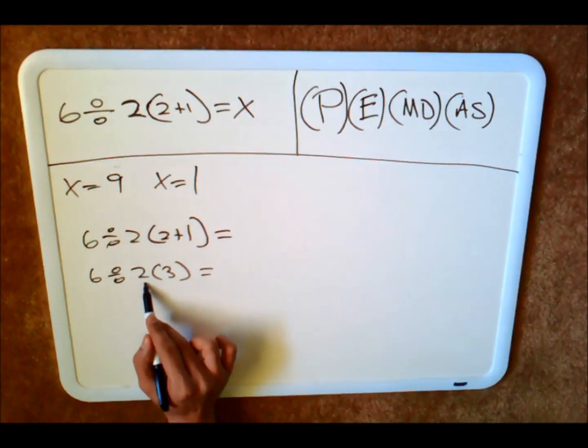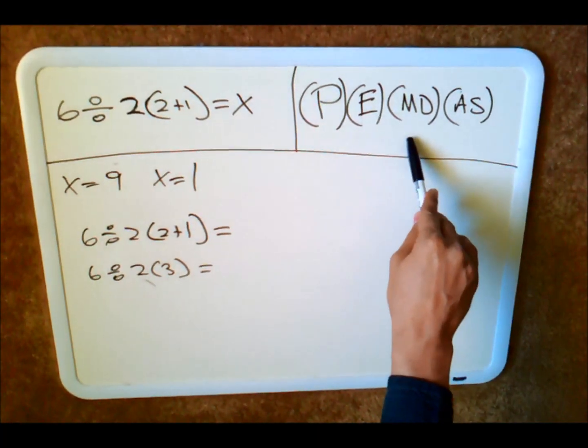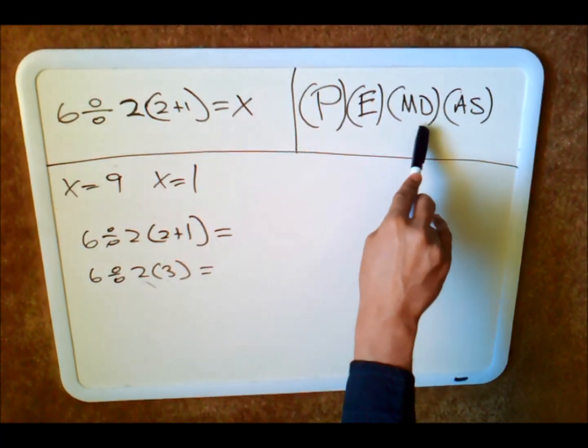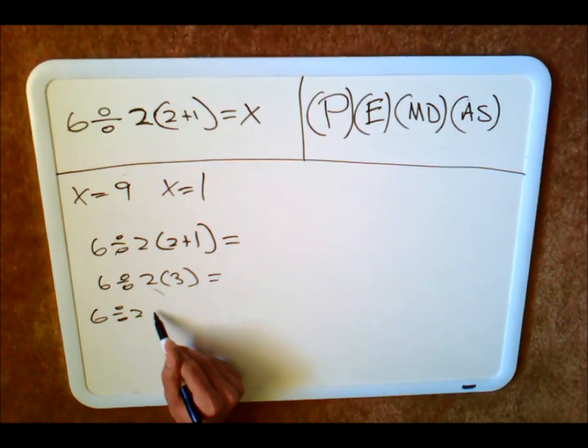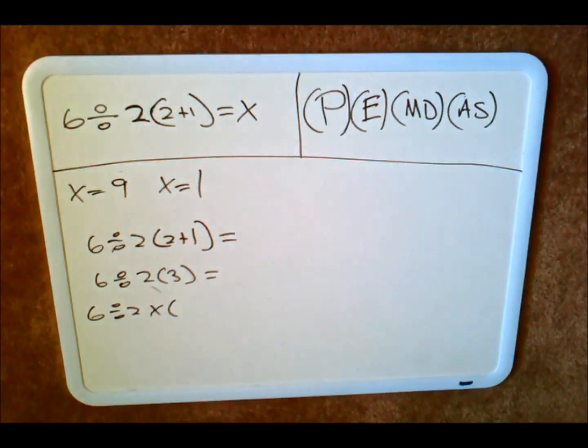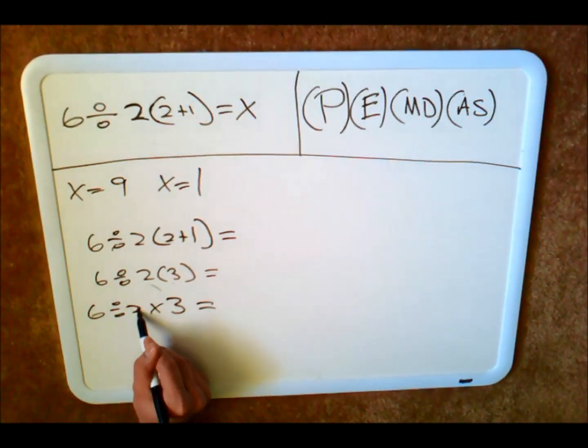So if you do it wrong, you're actually doing a multiplication before division. And from the order of operations, you can see that it's whatever comes first. So this problem is actually 6 divided by 2 times 3.